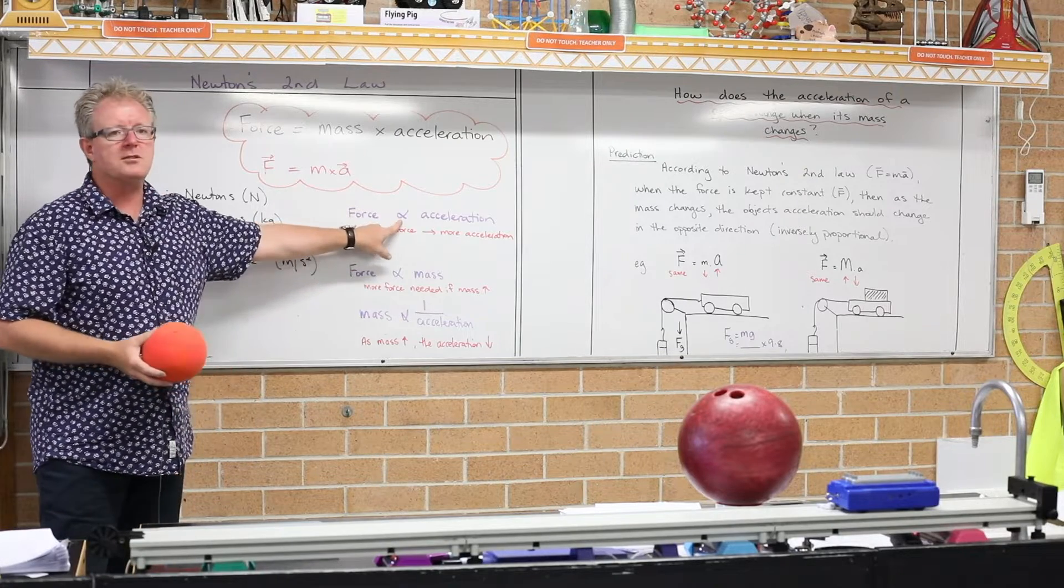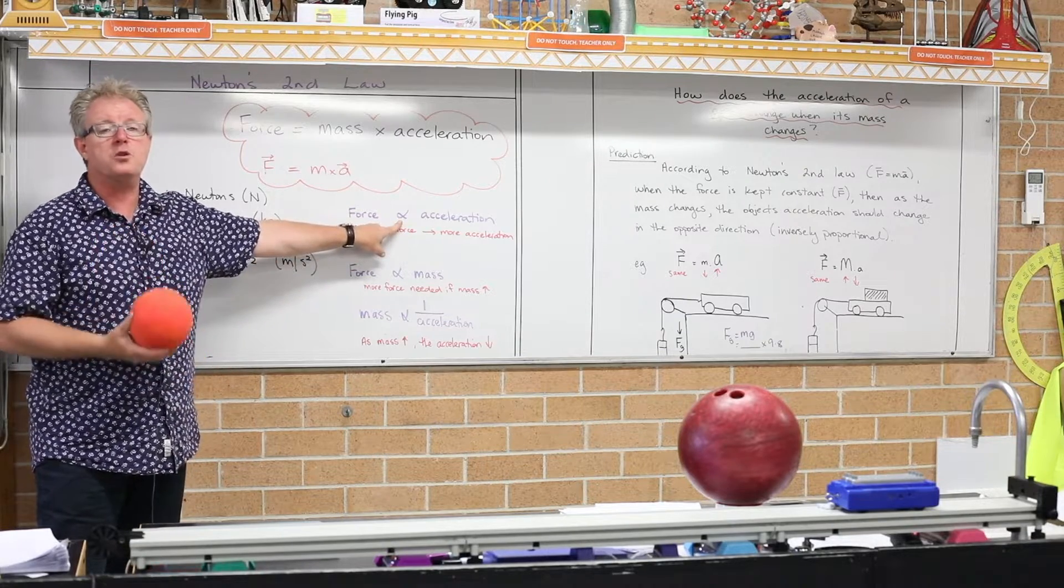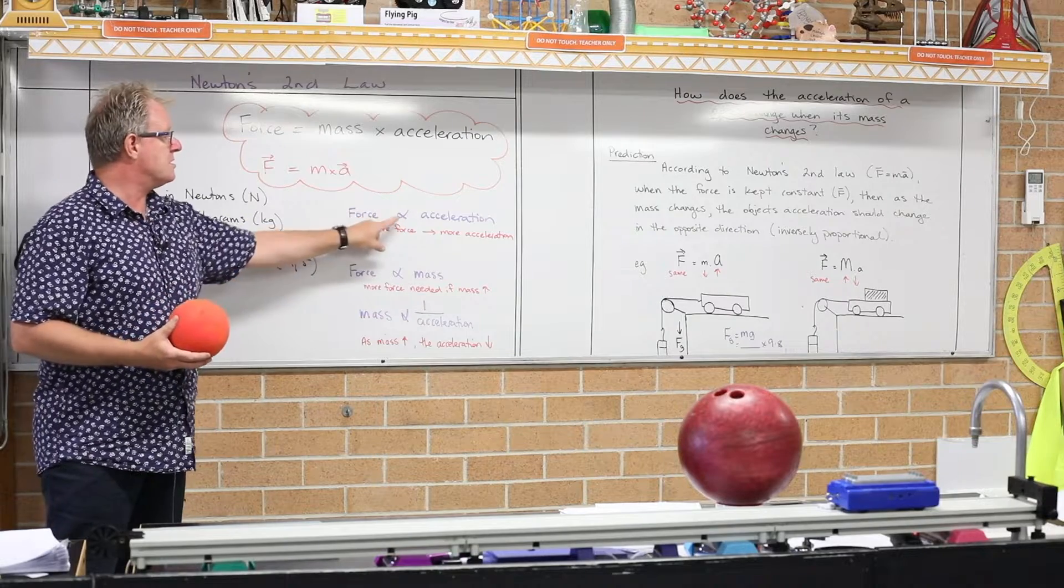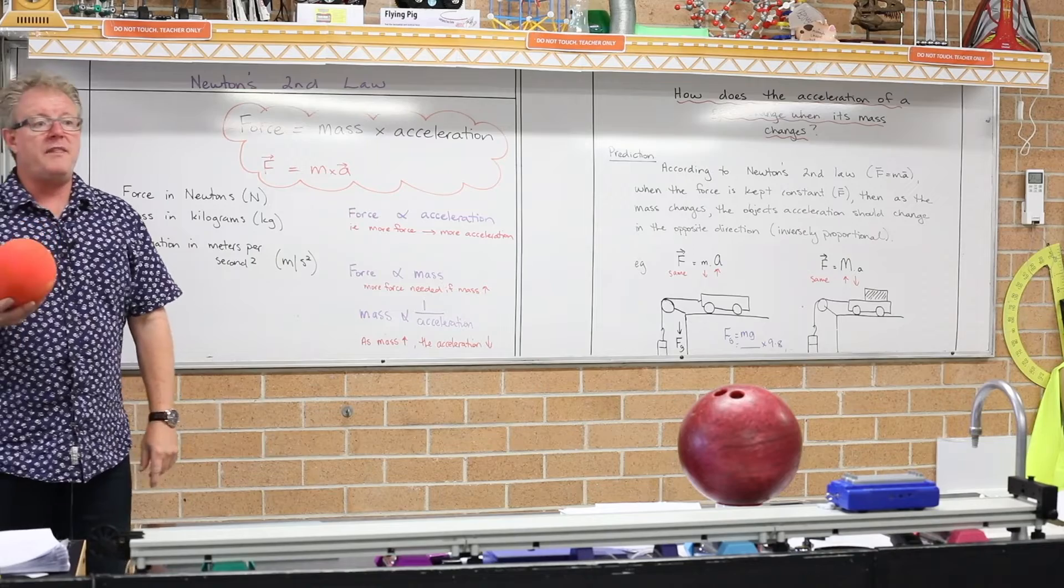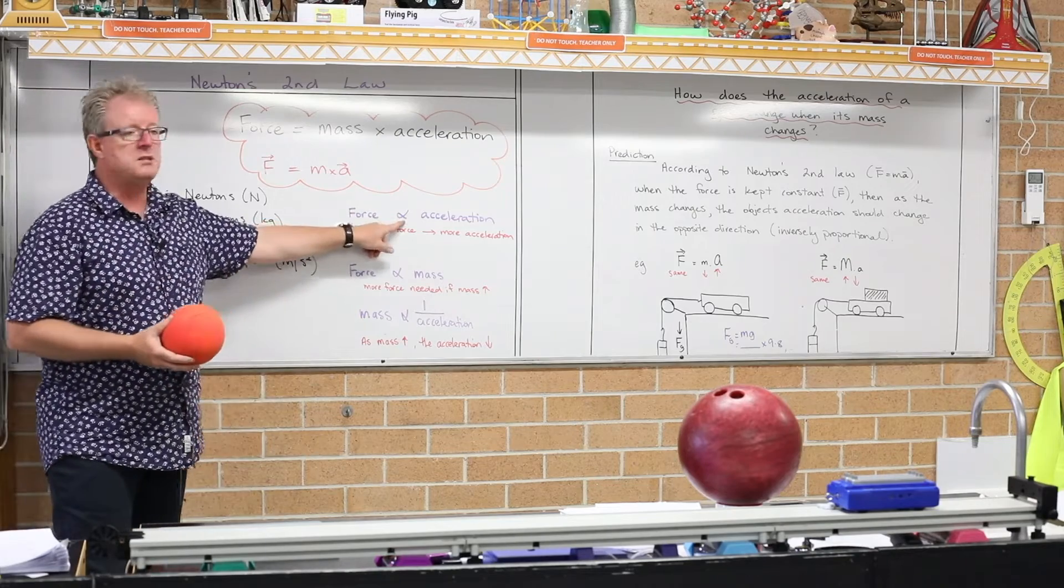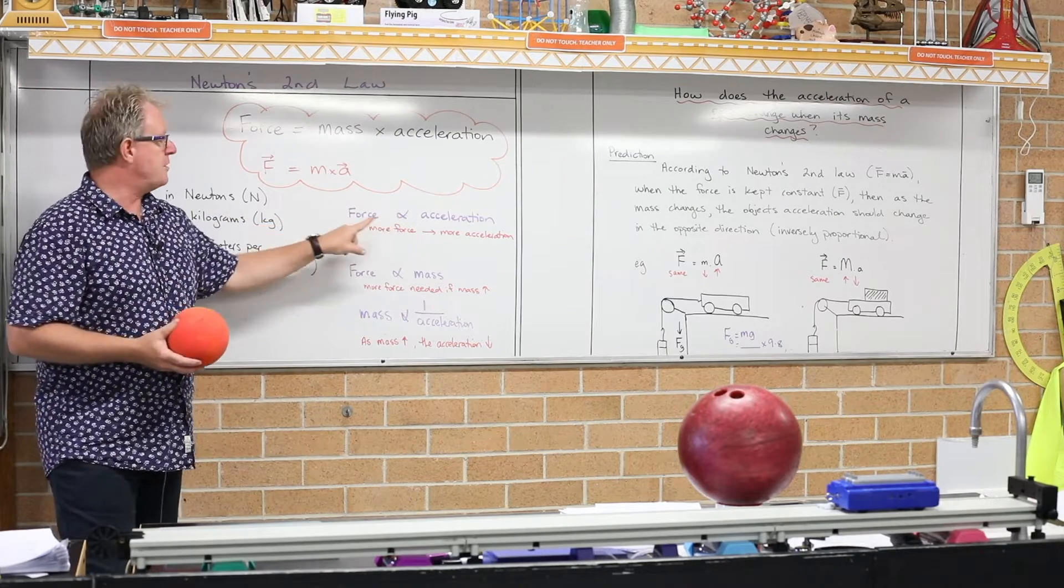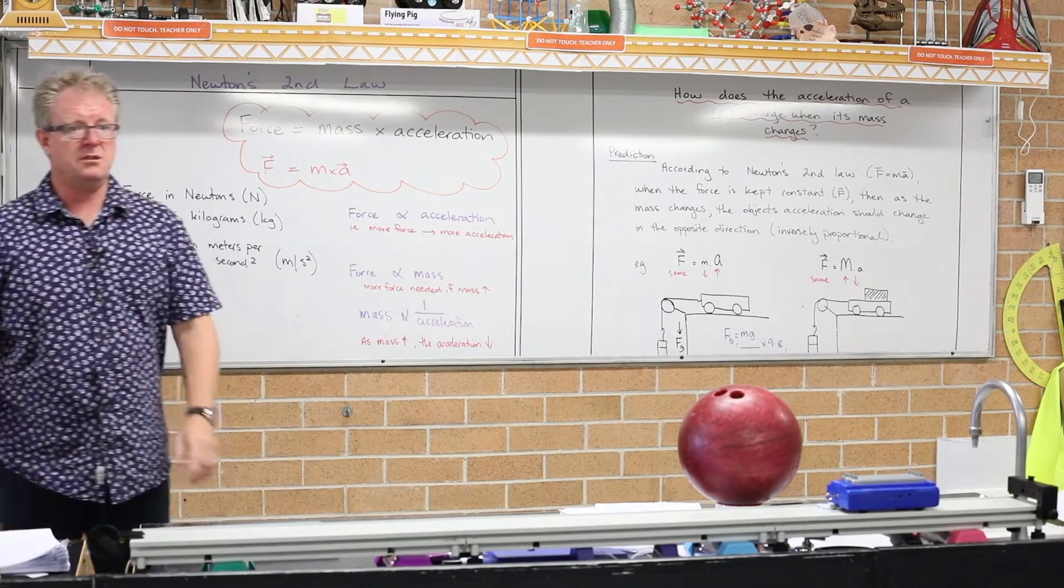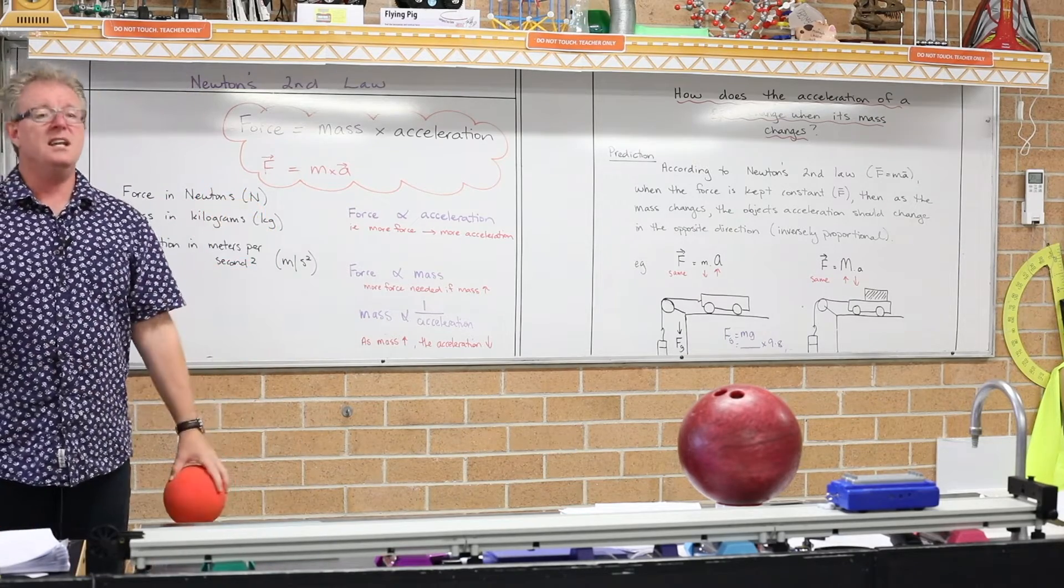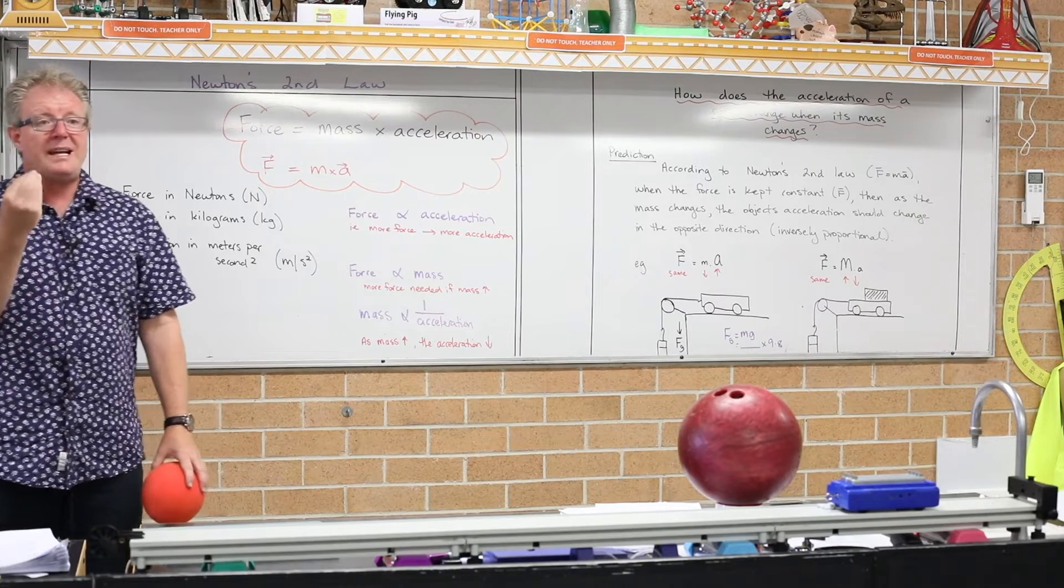This little symbol here that looks like a fish swimming is a proportion symbol. Force is proportional to acceleration. So you might want to write that down in your books. The little squiggle here means proportion. So force is proportional to acceleration. The more force, the more acceleration. The less force, the less acceleration. It's directly proportional.